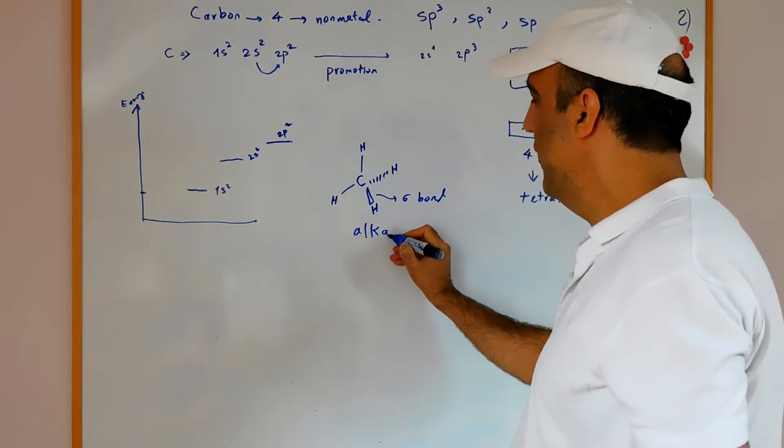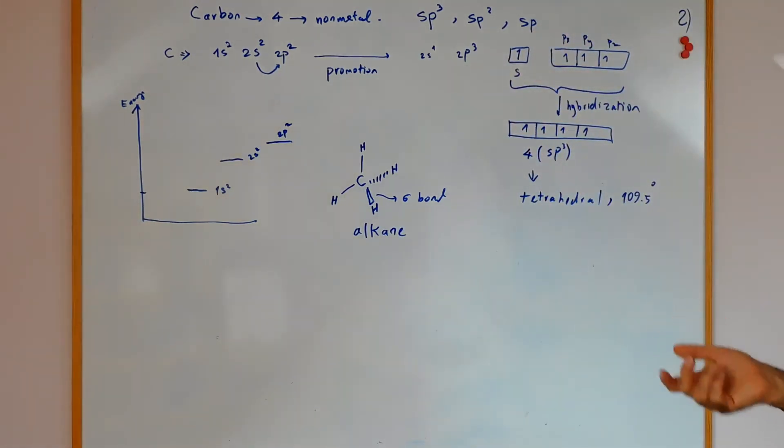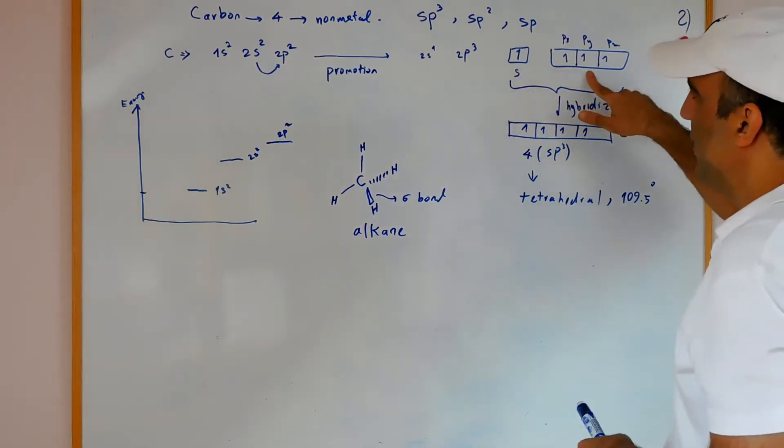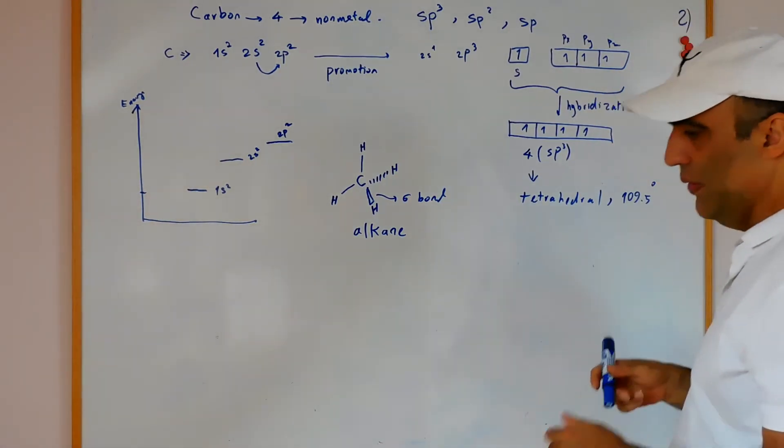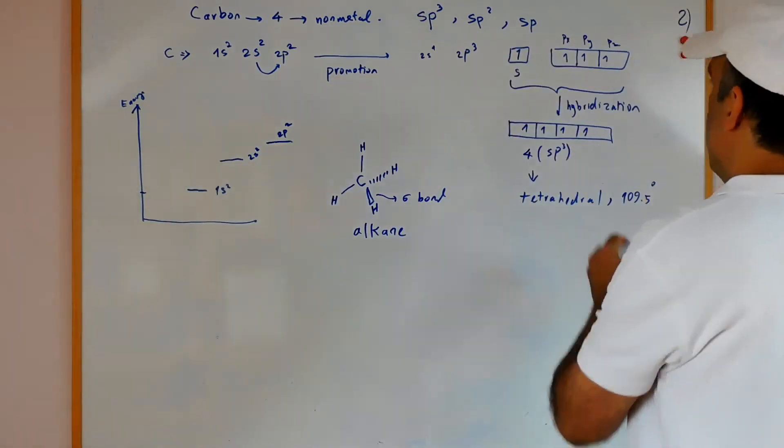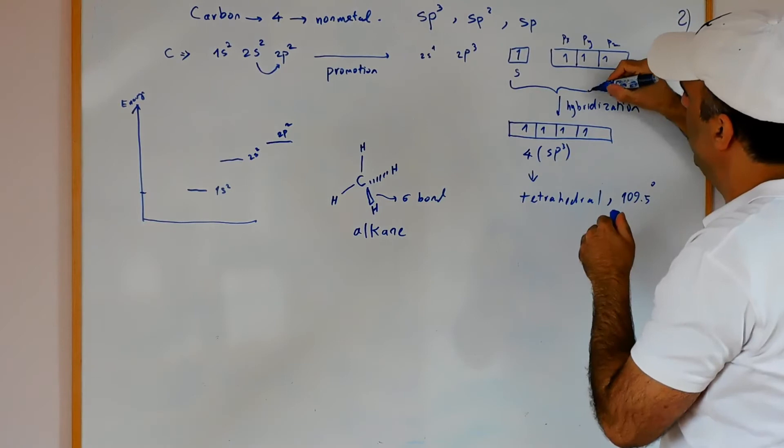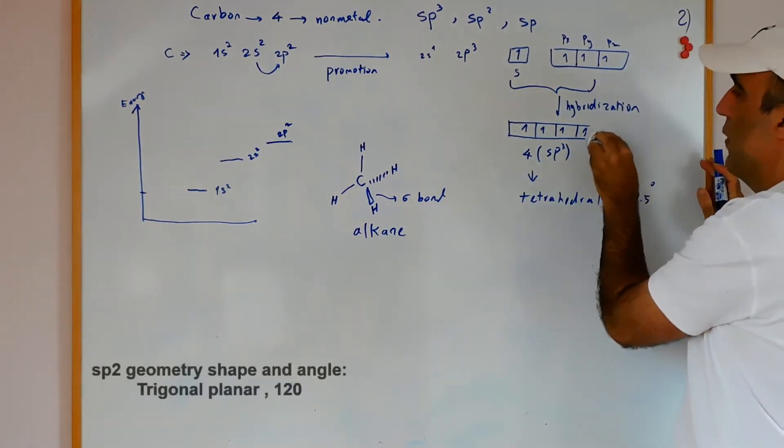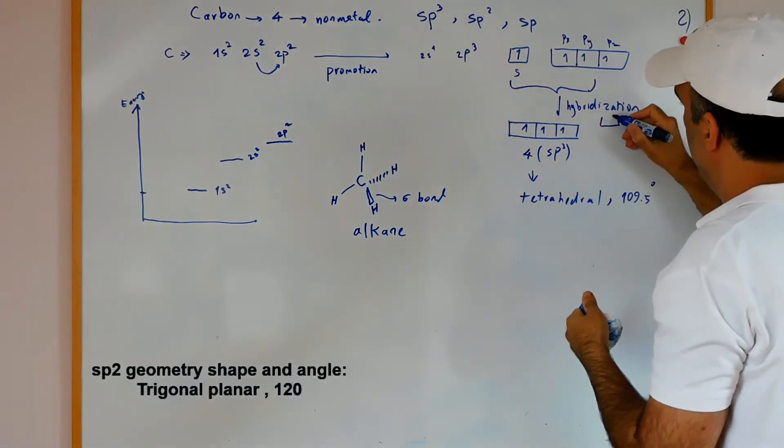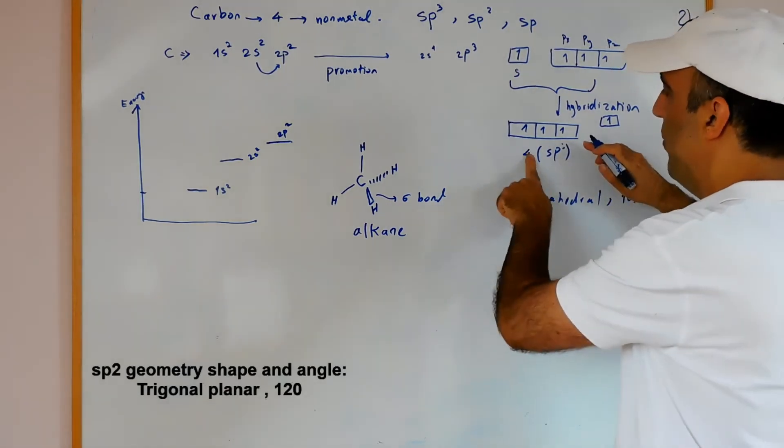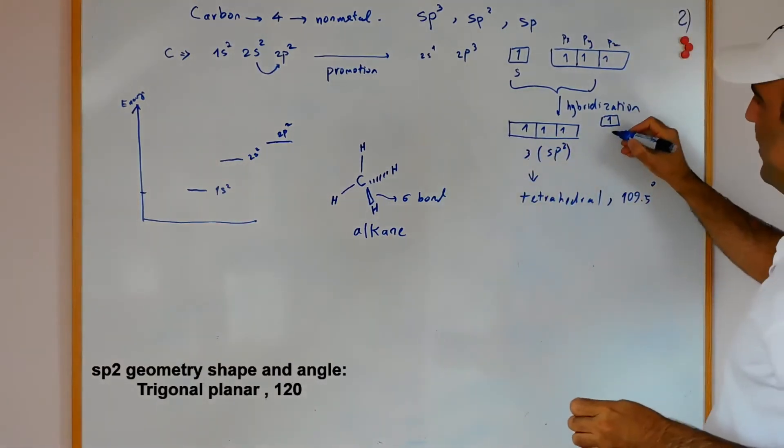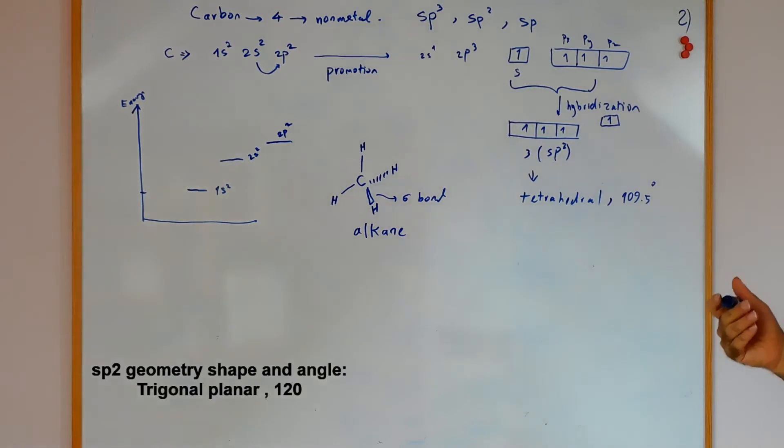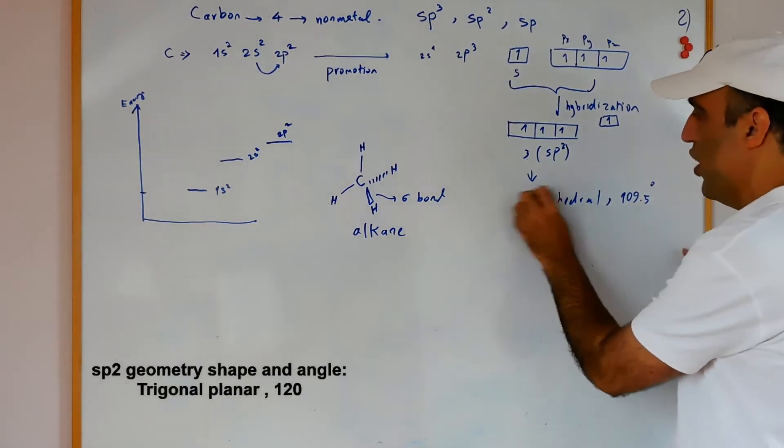But if we hybridize one s with two p orbitals and the third one remains, in this situation it will be sp2 because from one s and two p. The pz is in the higher energy level.